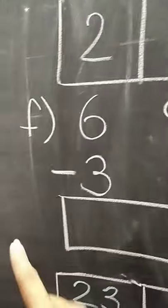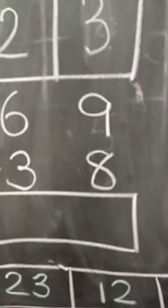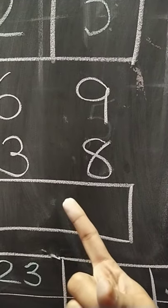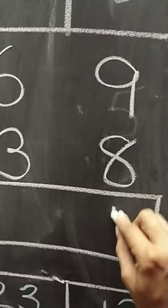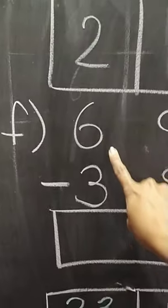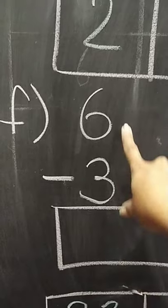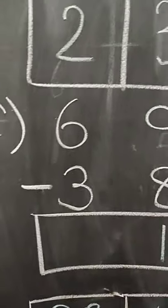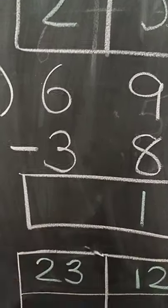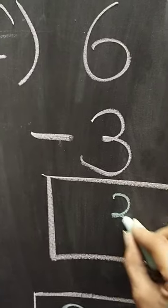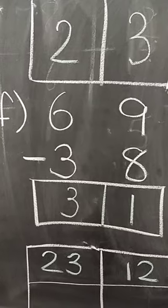Next, F. Again, 9 minus 8. What comes after 8? 9. So, 9 minus 8 will be 1. And 6 minus 3 — after 3 we count till 6: 4, 5 and 6. So, 6 minus 3 will be 3. Our answer is 31.